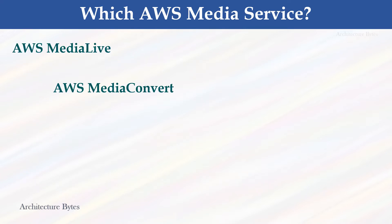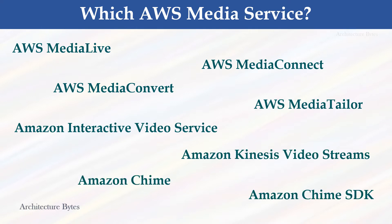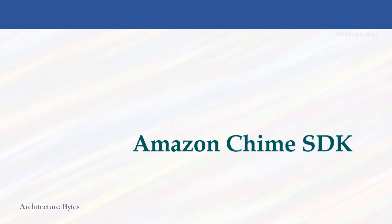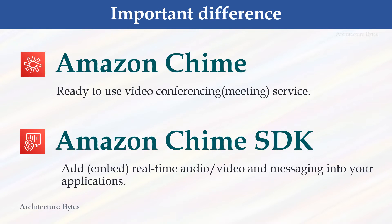AWS provides several media services which can be used to create a variety of streaming applications. However, of these, Amazon Chime SDK is more suitable to build our meeting application. It is important to know the difference between Amazon Chime and Amazon Chime SDK. Amazon Chime is a ready-to-use video conferencing service much like Zoom, Google Meet, or Microsoft Teams, while Amazon Chime SDK consists of building blocks necessary to add or embed collaborative video, audio calling, and screen sharing features to your web or mobile applications.